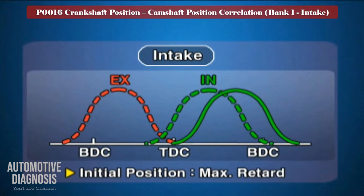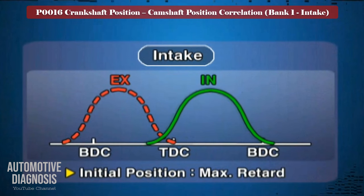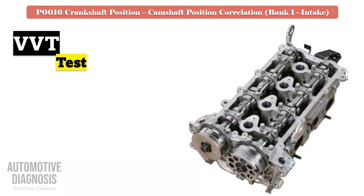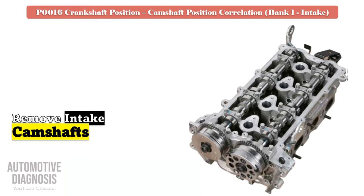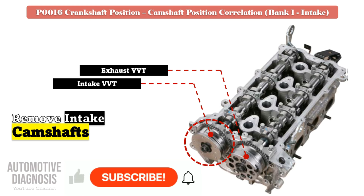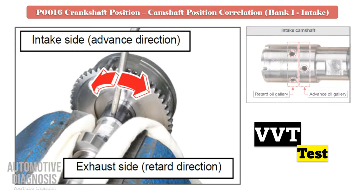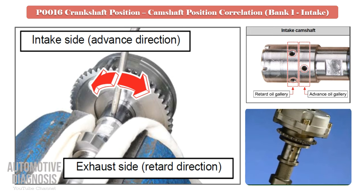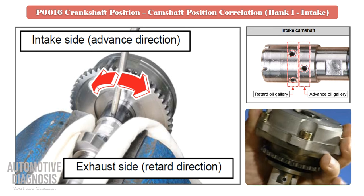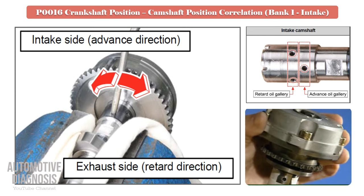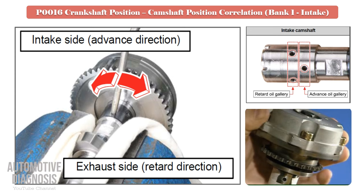Remember that the intake VVT is locked at maximum retard when the engine is off. So as soon as the engine is started and warmed up, it should advance the intake camshaft, otherwise there will be a correlation fault code. For testing the intake VVT, remove the intake camshaft and locate the advance and retard oil passages. Test the intake VVT by providing compressed air into the relevant oil galleries. When you provide air into the advance oil gallery, the VVT should rotate, as the intake VVT is locked at maximum retard. Before providing compressed air, make sure the VVT is locked and does not rotate. If VVT fails this test, it must be replaced.